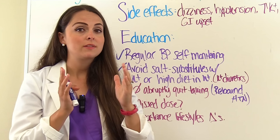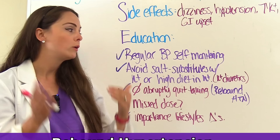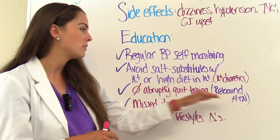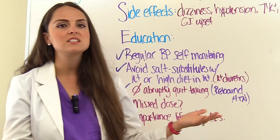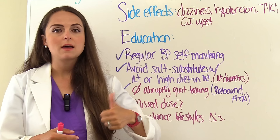Teach patients to never abruptly stop taking the medication, because ARBs and ACE inhibitors can cause rebound hypertension, where blood pressure rises very high and becomes difficult to control. Regarding missed doses: if they remember the same day, go ahead and take the dose. But if they don't remember until the next day, skip the missed dose and just take the scheduled dose for that day — do not double up.